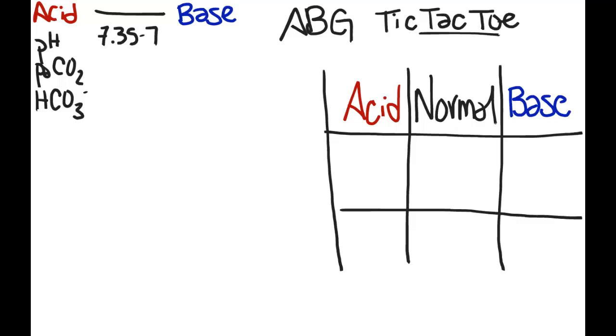Normal ranges from 7.35 to 7.45, and anything below 7.35 is acidic and above 7.45 is basic.